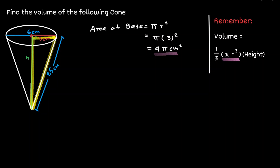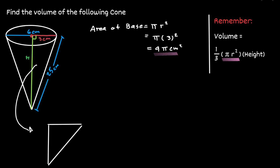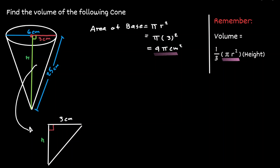Let's concentrate on the triangle, where the upper side is the radius of the circle, which is three centimeters, and the hypotenuse is the diagonal distance in our cone, which is 25 centimeters. So now we will have three squared plus the height squared equals 25 squared. Let's simplify this result: three squared is nine and 25 squared is 625.